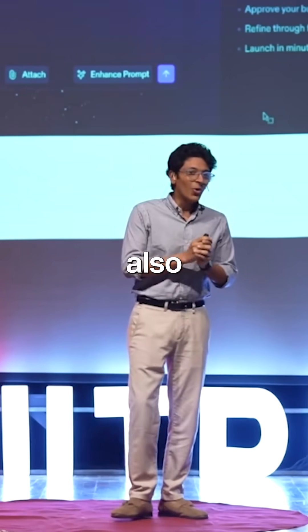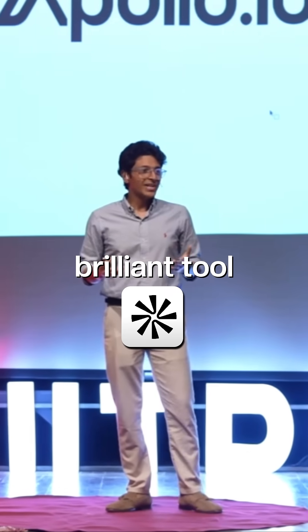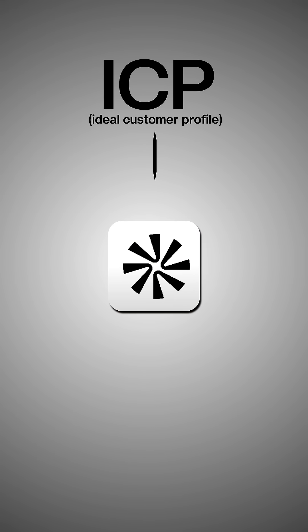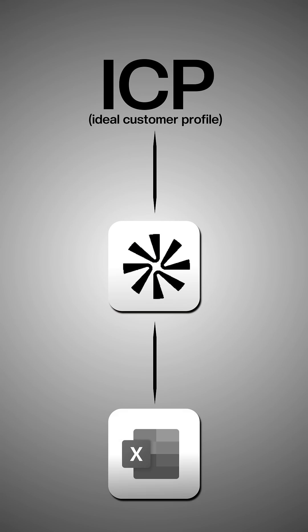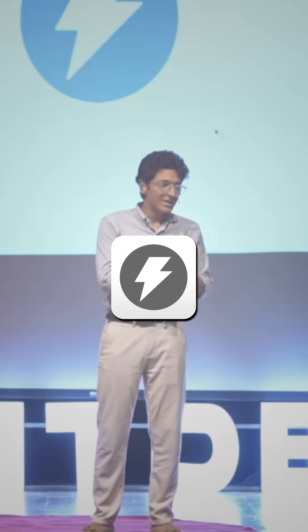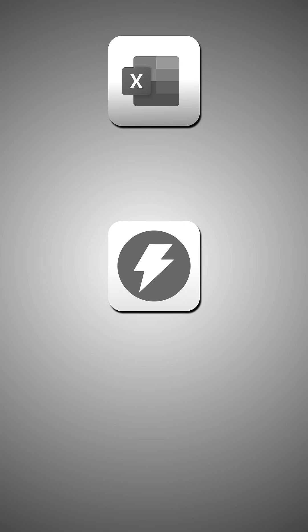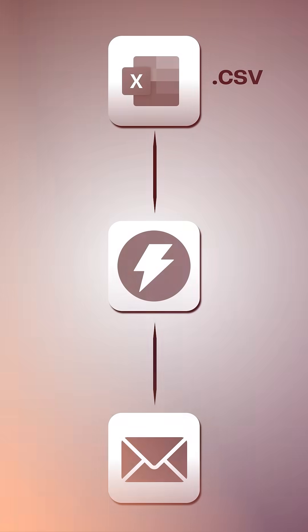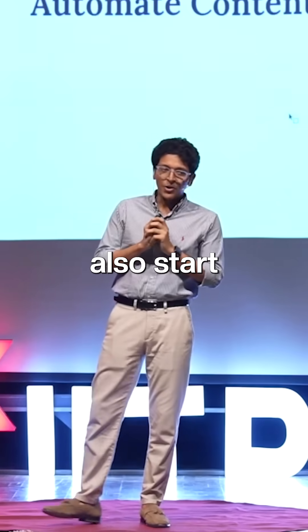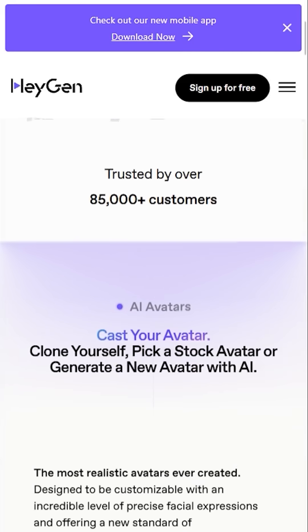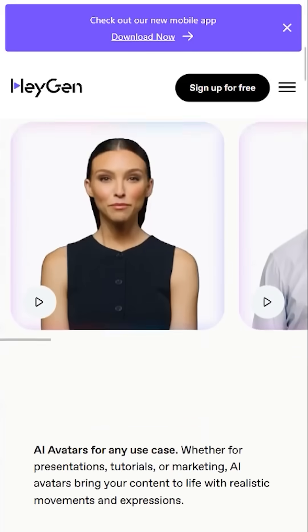You can also automate sales. Apollo is a brilliant tool which lets you take your ICP, put it into the filters, and it creates the lead list for you instantly — enabling you to take that lead list as a CSV file and start sending out cold emails.